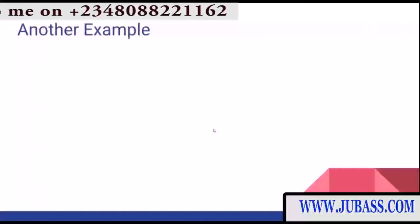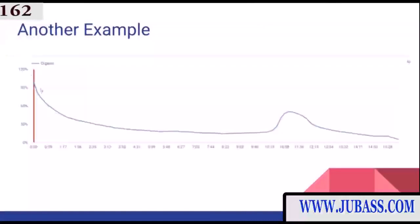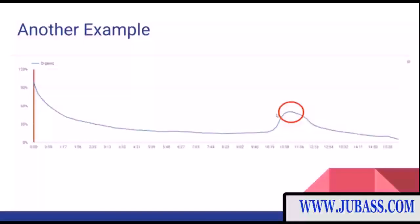Here's another example of a different kind of audience retention chart. This chart kind of goes down and then there's a big action point at about 10 minutes into the video. You definitely want to add an advertisement right at the peak of that action point in this video.